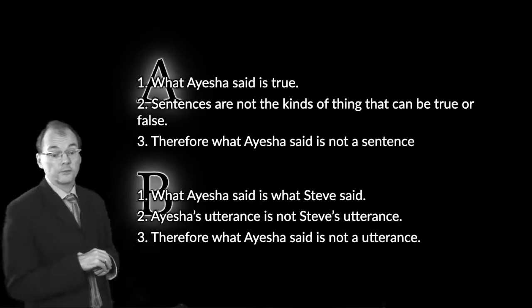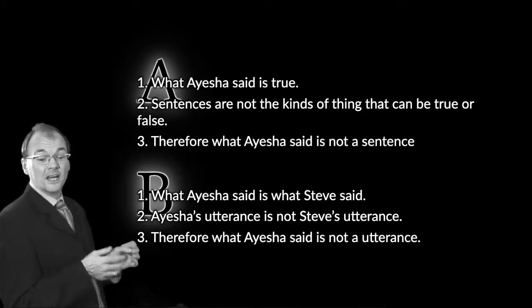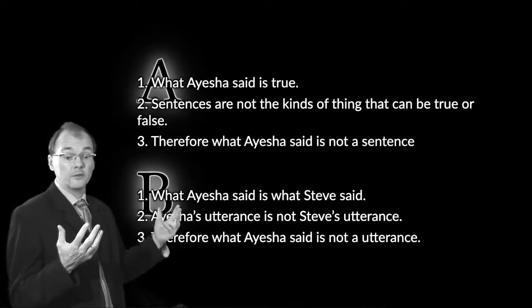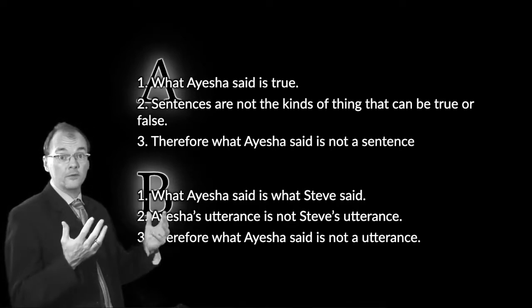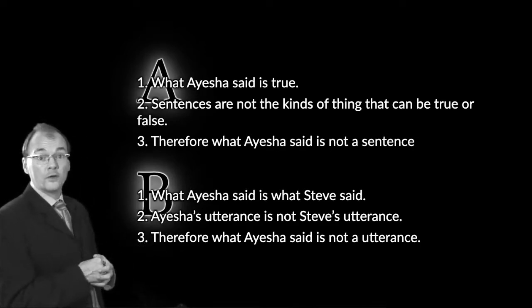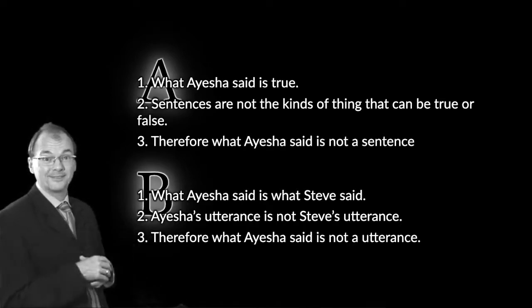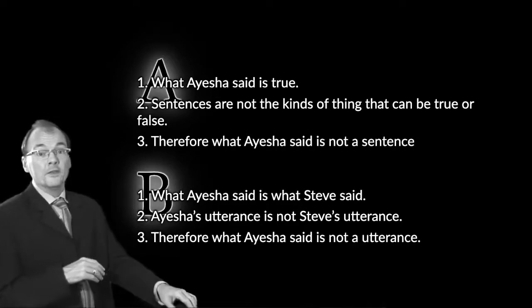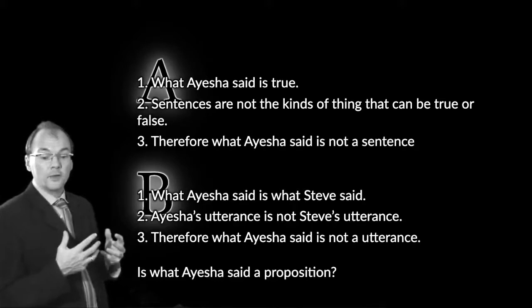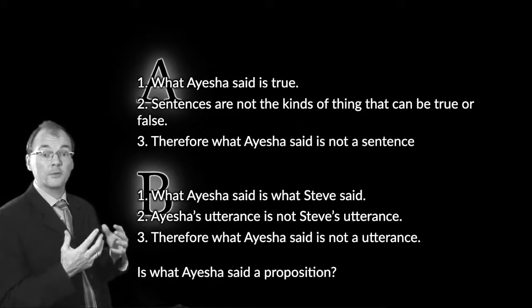Here's a second complementary inference. 'What Aisha said is what Steve said.' But Aisha's utterance is not Steve's utterance — she said one thing at one time, he said something else at a different time. Because utterances are events, difference in time means difference in thing. So what Aisha said is not an utterance. Given that those two arguments are right, it's quite tempting to think that what Aisha said must be something — and since it can't be either a sentence or an utterance, it must be a proposition.